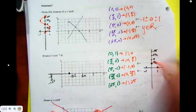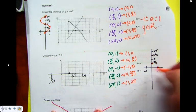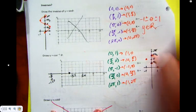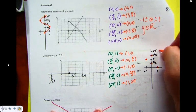Zero, pi on two. Negative one, pi. Zero, three pi on two. And one, two pi.